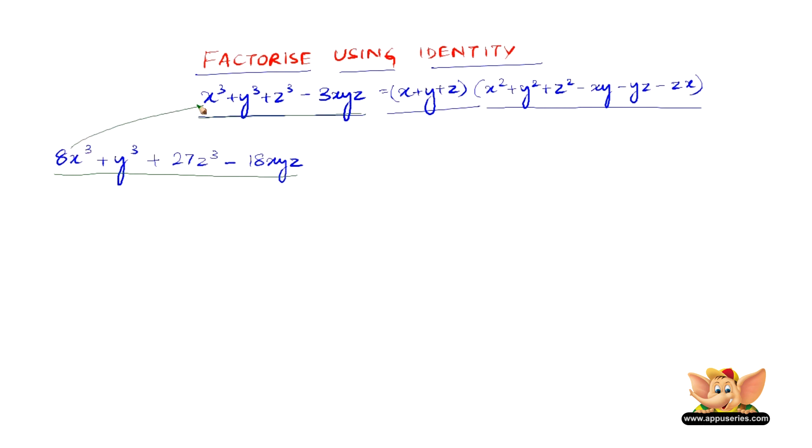We have 8x³ in place of x³, y³ and y³ are the same, 27z³ in place of z³, and 18xyz in place of 3xyz.